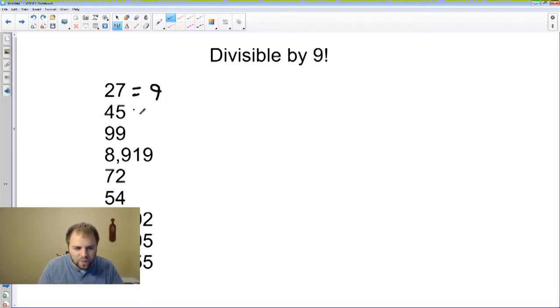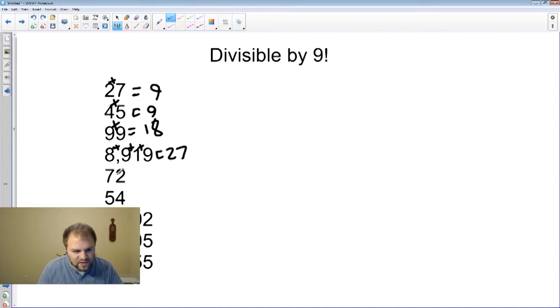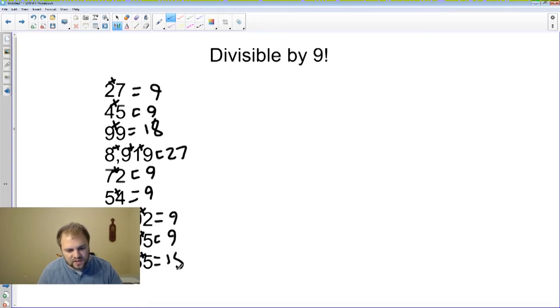Seven plus two equals nine. Four plus five equals nine. Nine plus nine equals eighteen. Eight plus nine plus one plus nine equals twenty-seven. Seven plus two equals nine. Five plus four equals nine. Six plus one is seven, plus zero, seven, plus two, nine. Four plus zero, plus zero, plus zero, plus five, nine. Two plus six is eight, plus five, thirteen, plus another five, equals eighteen. As you can quickly see, nine, eighteen, twenty-seven, nine, eighteens, they're all multiples of nine. Or in other words, these are all divisible by nine.